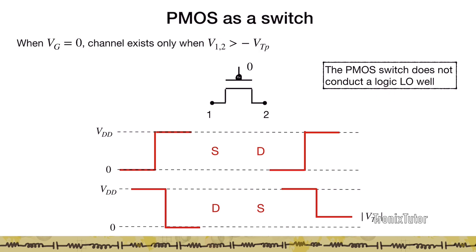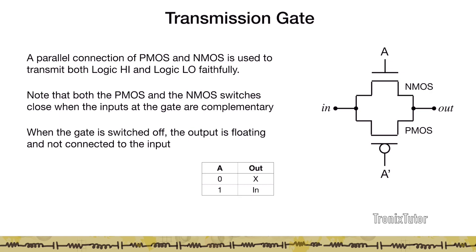So what you see here is that the PMOS switch does not conduct the logic low well. The NMOS and PMOS differ in that the NMOS is not able to conduct a high well. It conducts a zero excellent. Similarly, a PMOS can conduct a one very well. It cannot conduct a zero. So we want to fix this issue.